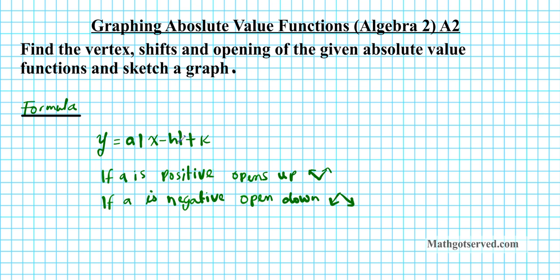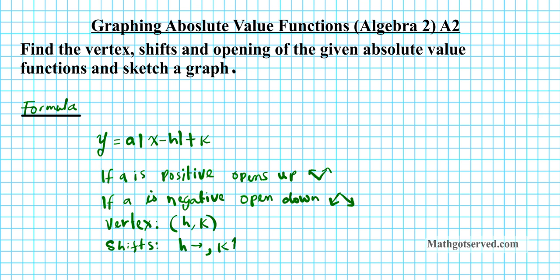How about h and k? H and k are your horizontal and vertical translations. The vertex is given by the opposite of the number next to x, which is h, and the number outside the absolute value sign that has been added on, which is k. This also tells us the shifts — h units to the right and k units upwards. If they are both negative, then you go the opposite direction.